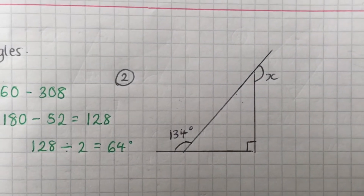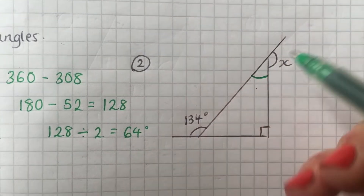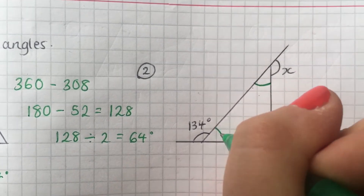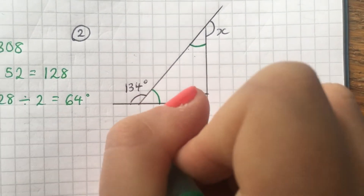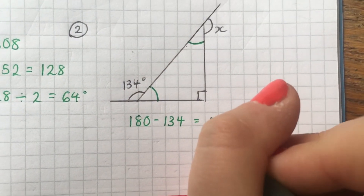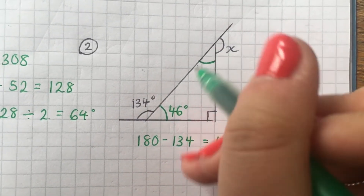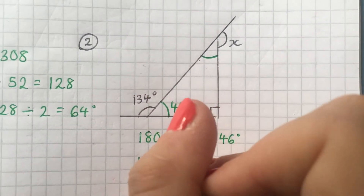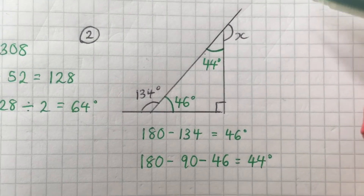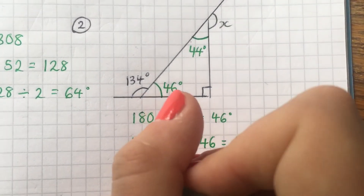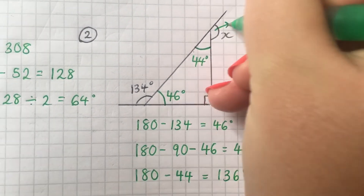Last question. We've got a triangle where this angle is 90 degrees, and we're looking for x. To work out x, we'll need this angle, and to get that we use angles on a straight line. First, the bottom angle is on a straight line with 134, so we do 180 minus 134 to get 46 degrees. Then using angles in a triangle: 180 minus 90 minus 46 gives us 44 degrees. Final step — angles on a straight line: 180 minus 44 gives us 136. So x is 136 degrees.